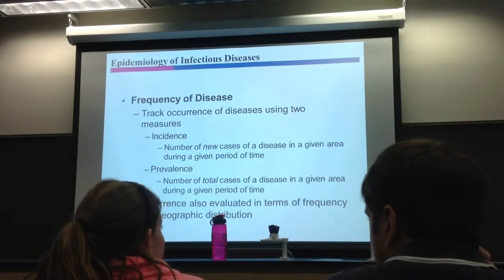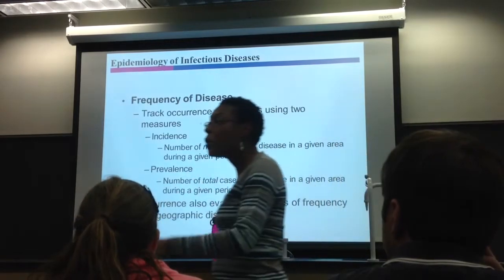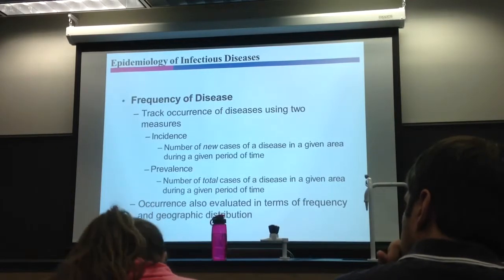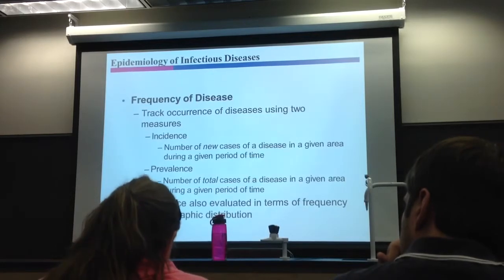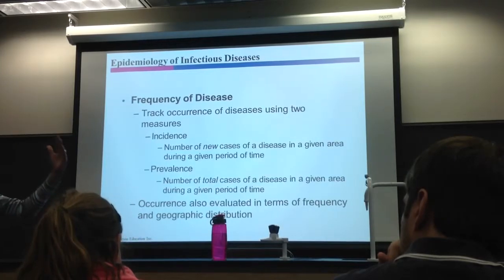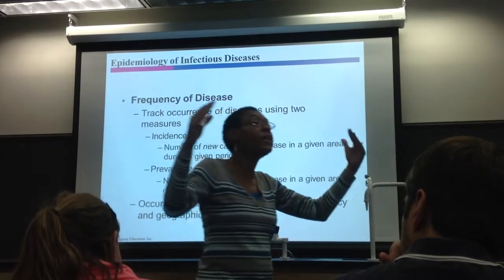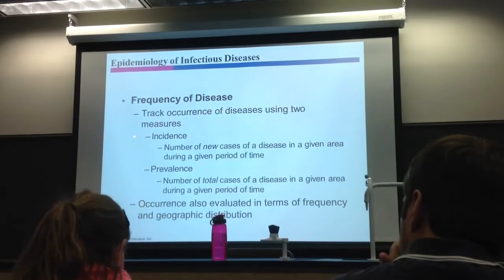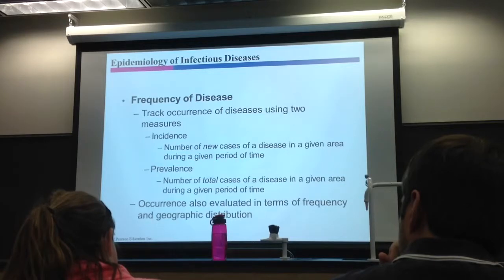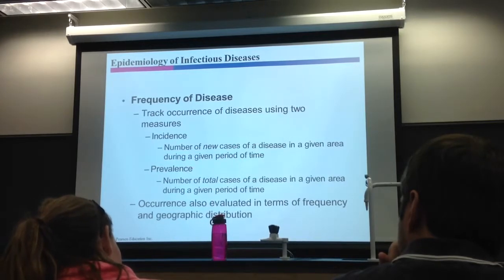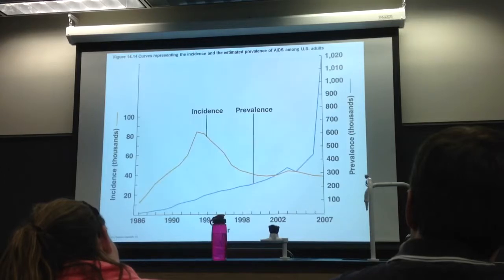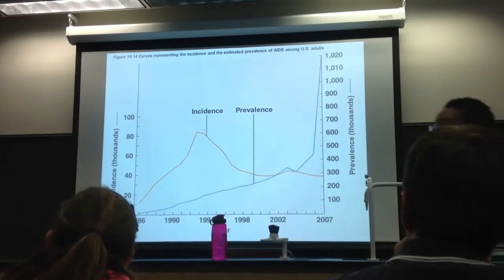In terms of frequency of disease, we track two things: incidence and prevalence. Incidence is the number of new cases in a given area in a given time. Prevalence is how prevalent a disease is in your community — the total number of disease cases, including new cases, in that given time. Here's a chart looking at prevalence and incidence of AIDS in the U.S.